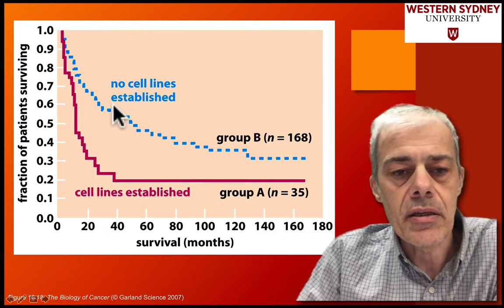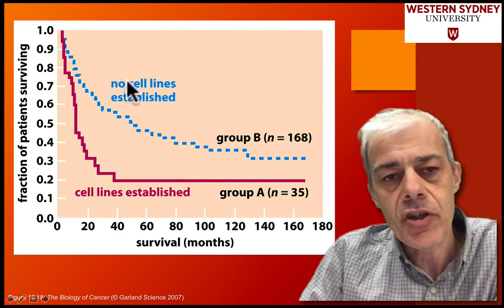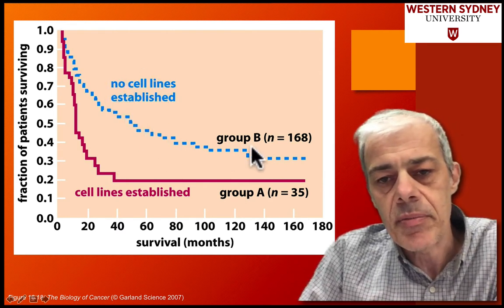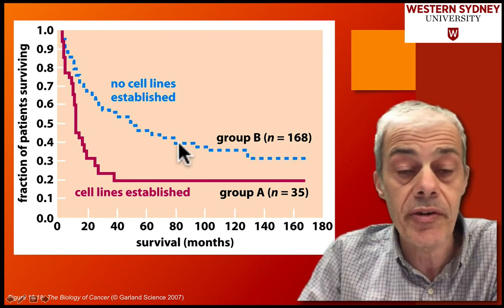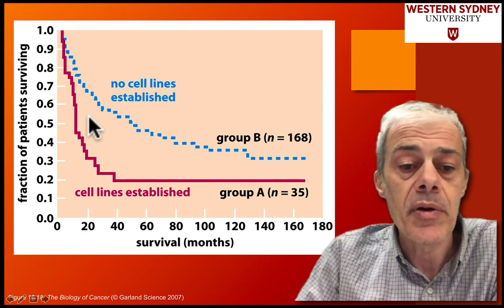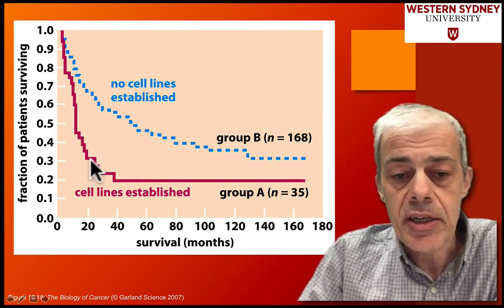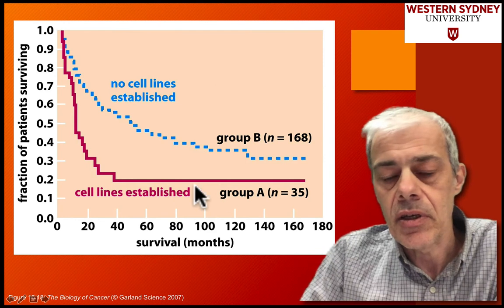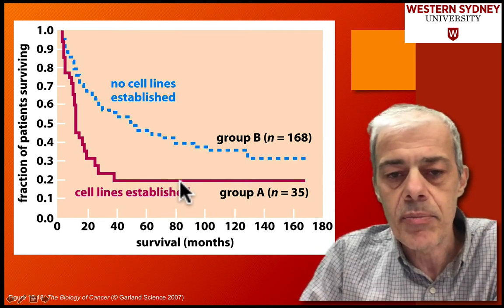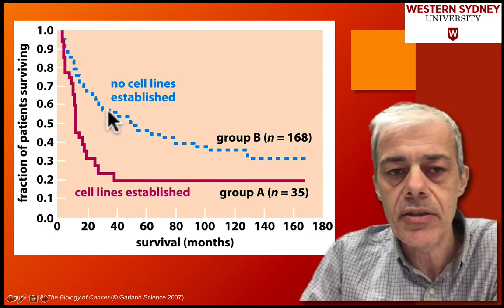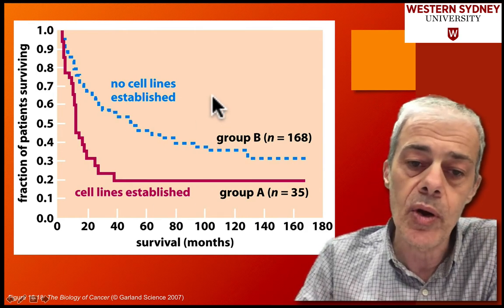This figure illustrates that from less aggressive tumours it is very difficult to establish tissue culture cell lines, since we do a lot of our experiments in tissue culture. From more aggressive tumours it's been easier to establish cell lines. The question is whether such a cell line is a valid model for an earlier stage of tumour — but some model is better than no model.